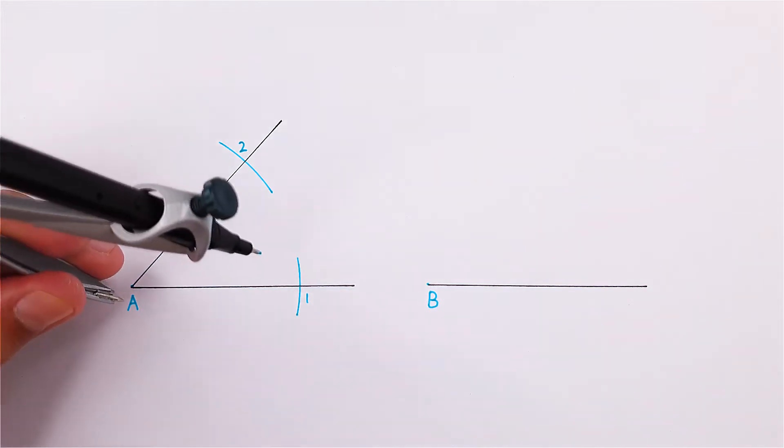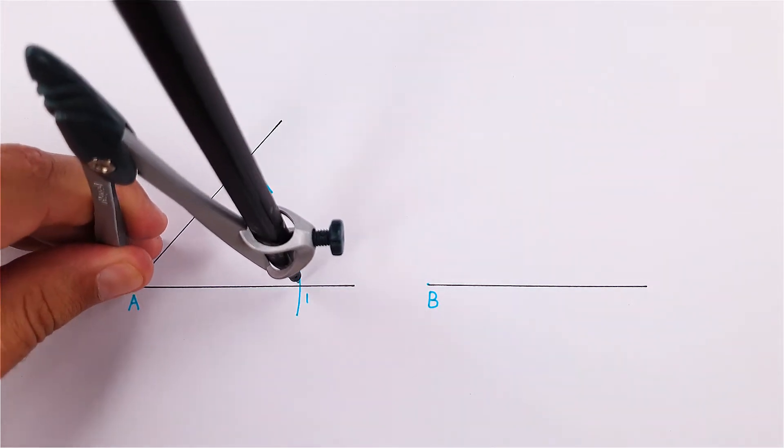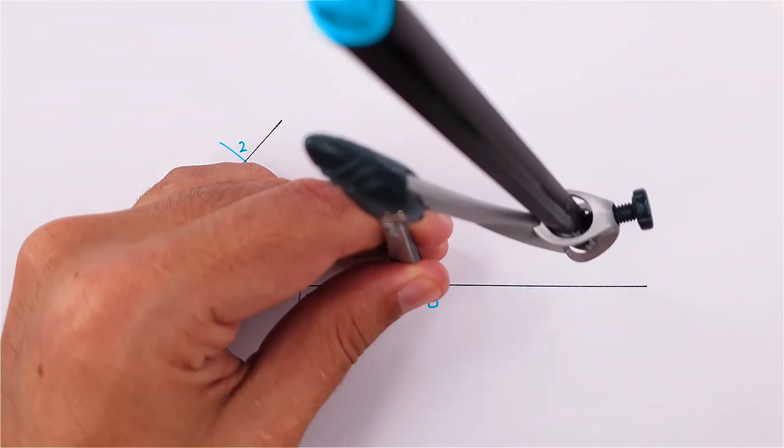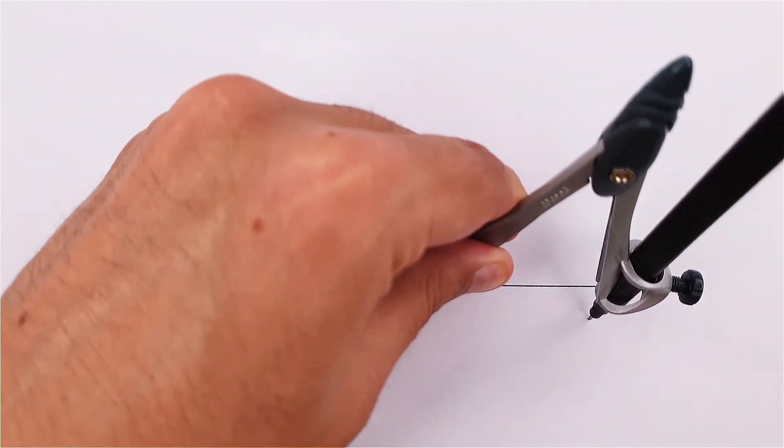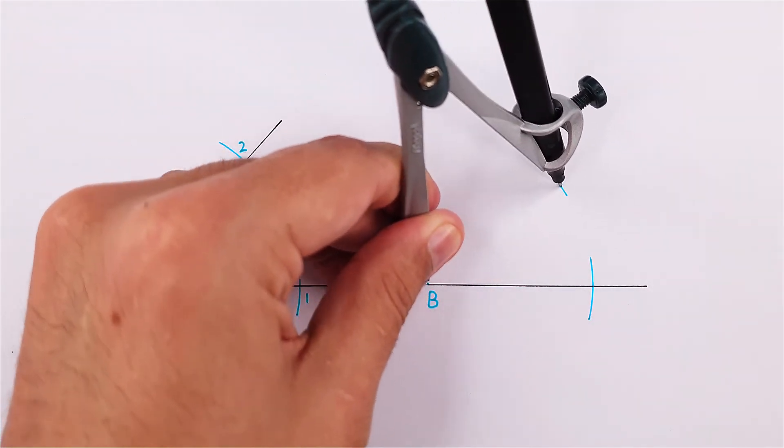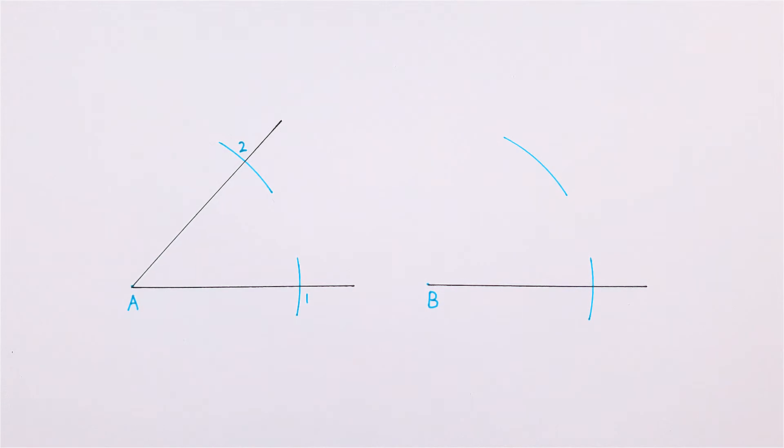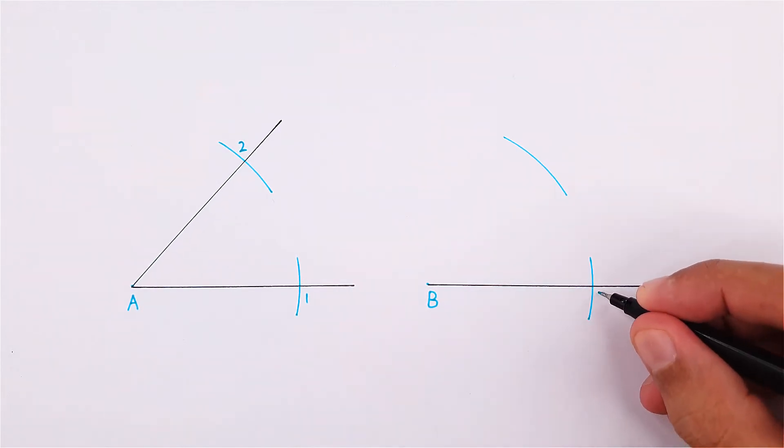Using this same measurement, place your compass on point B and draw an arc that will section the already drawn side, and another arc more or less where point 2 could be. Label the intersection as point 1.